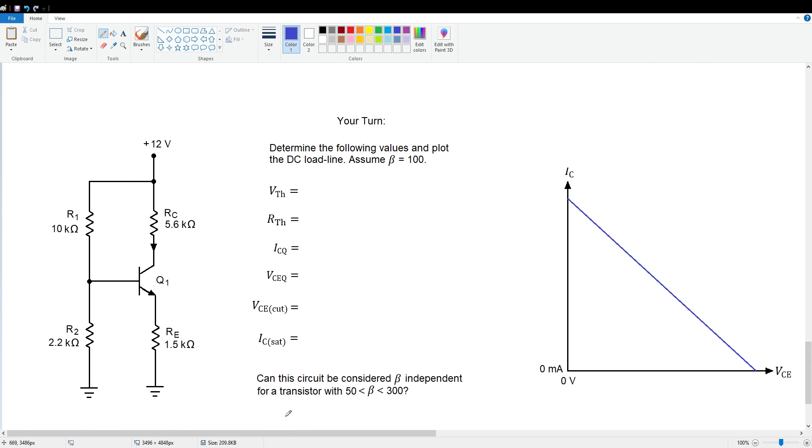Not quite as good as the previous circuit because we have 26 to 1 here, and in the previous circuit, we had a 45 to 1 ratio, which made it a little better. Now, I'm going to leave with a homework assignment for you guys to do. Here's our circuit. I want you to determine VTH, RTH, ICQ, VCEQ, and cutoff and saturation. Plot the Q point and the DC load line coordinates. And answer the question, can this circuit be considered beta independent for a transistor with a beta that ranges from 50 to 300? I think you can probably guess that, yes, it's going to be beta independent. But I'll leave the details up to you.